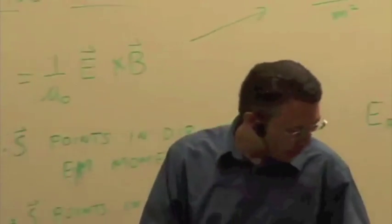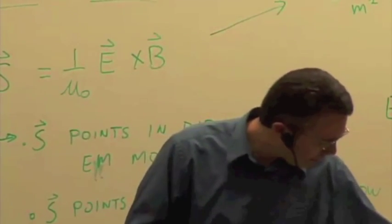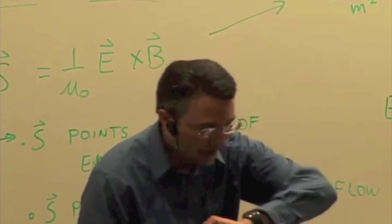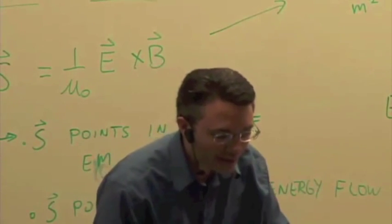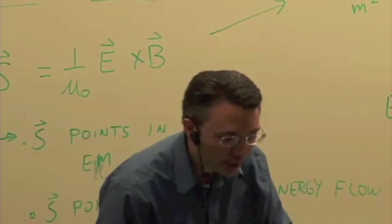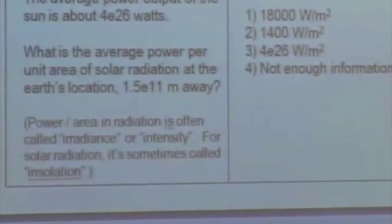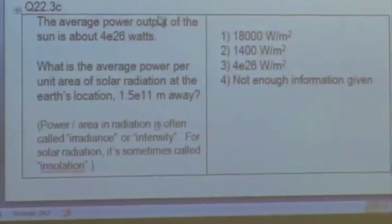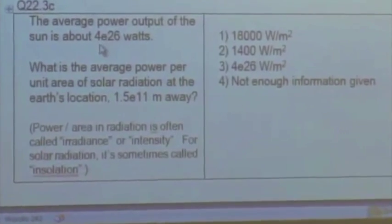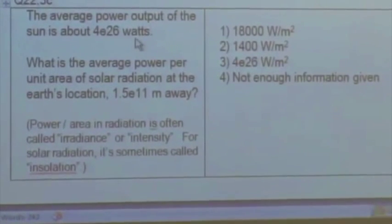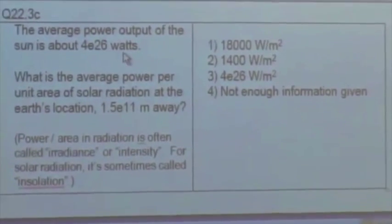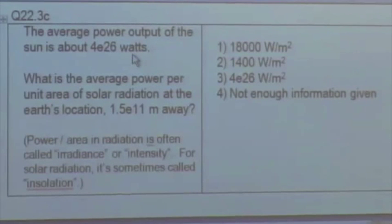All right, we're not going to talk too much about that, but you may run into it. Let's try this. This is kind of a fun problem. Pretty straightforward, but let's say you know the power output of the sun. And we can measure that. It's 4 times 10 to the 26 watts. So every second, 4 times 10 to the 26 joules of energy are being emitted by the sun in all directions.